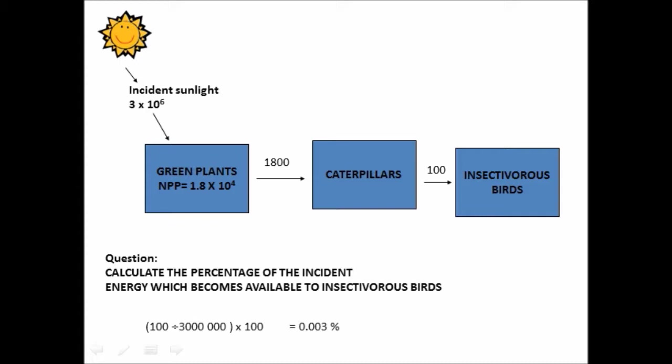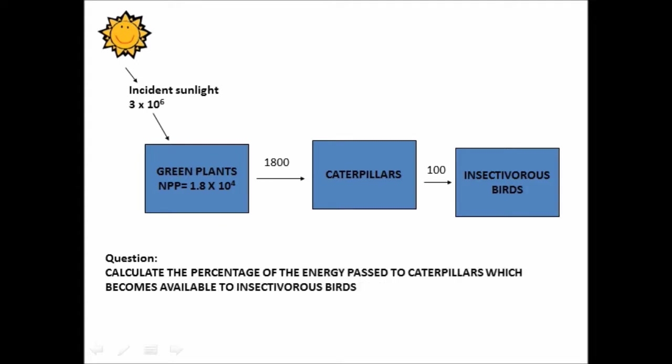Okay, you're getting the idea. Let's do one more. Percentage of the energy passed to caterpillars, which becomes available to insectivorous birds. So the amount of energy passed to caterpillars is 1,800. The amount available for insectivorous birds is 100. Let's plug them into the equation. Here we are.